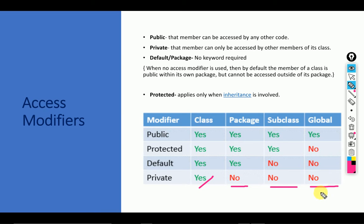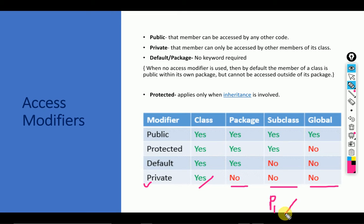Globally means it cannot be accessed by another package. Suppose I have a class A associated with package P1, and I have another package P2. If package P2 wants to access package P1, in private that cannot be possible — another package P2 cannot access it directly. This is the feature of the private access modifier.